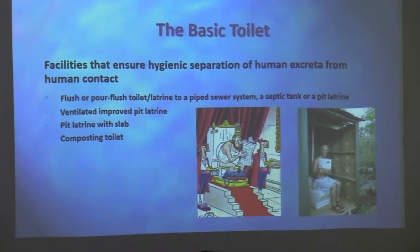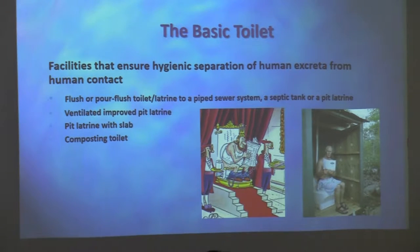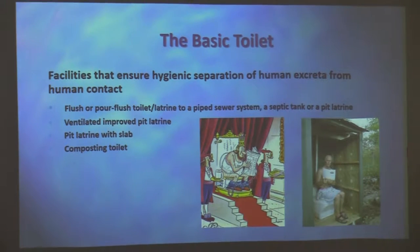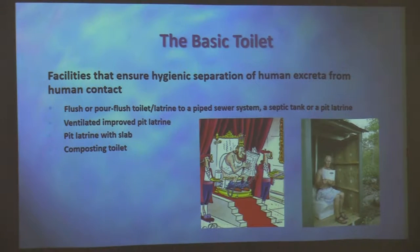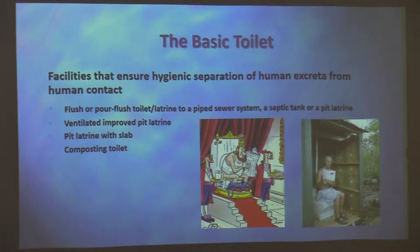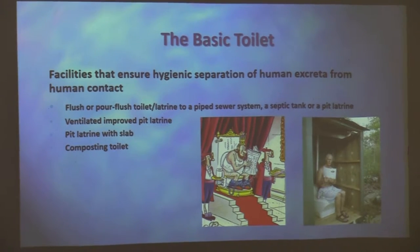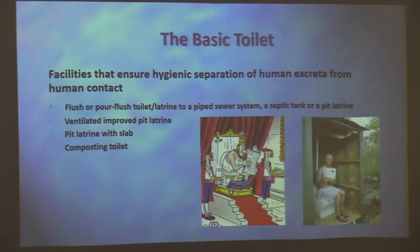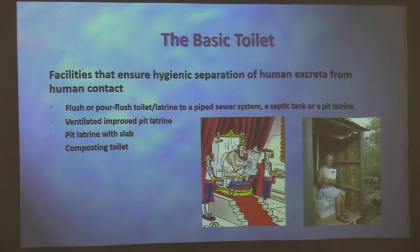This could be flush or pour toilets, latrines to a sewer system, a septic tank, a pit latrine with some ventilation, a pit latrine with a slab, or a composting toilet. It doesn't necessarily have to be the toilet you see across the hallway at Mercy College. It just has to have this basic idea that you're separating what you put into the toilet from directly touching your body.